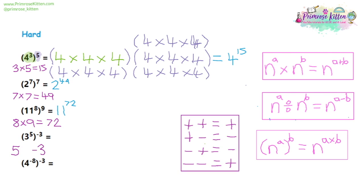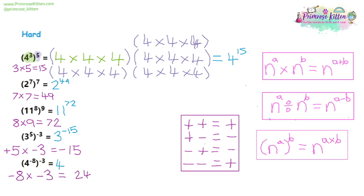For the next one, five multiplied by minus three is going to give us minus 15, so our overall answer is three to the power of minus 15. For the last one, we have minus eight multiplied by minus three. Because we have a minus multiplied by a minus, that gives us a positive value — plus 24. So our overall answer is four to the power of 24.